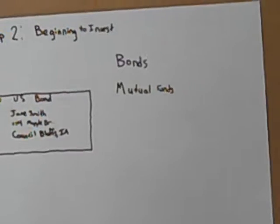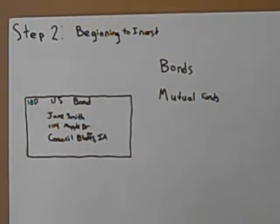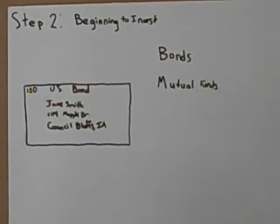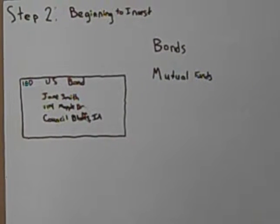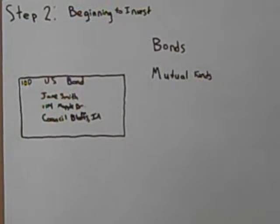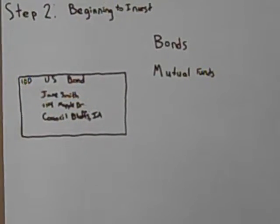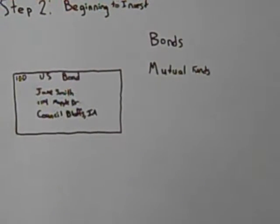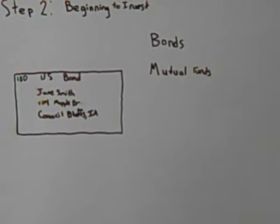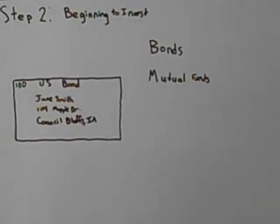Step two: beginning to invest. This is usually after you've established your put and take account. This is also usually a low risk investment, such as mutual funds, but with low risk there's also low return. Usually people begin in their 20s or 30s.